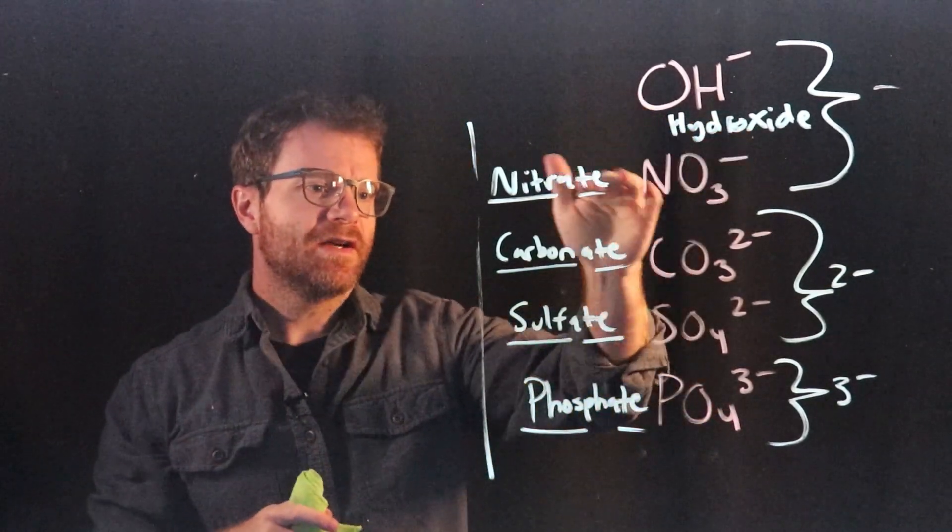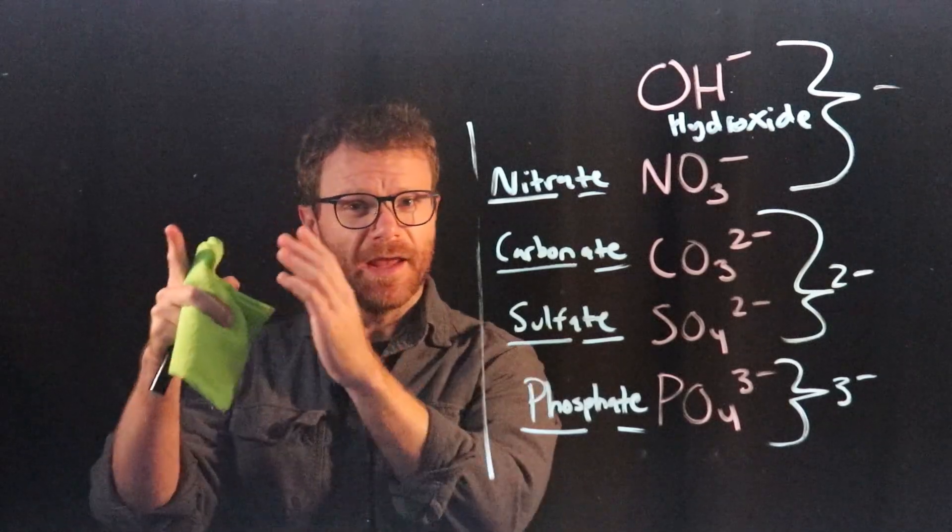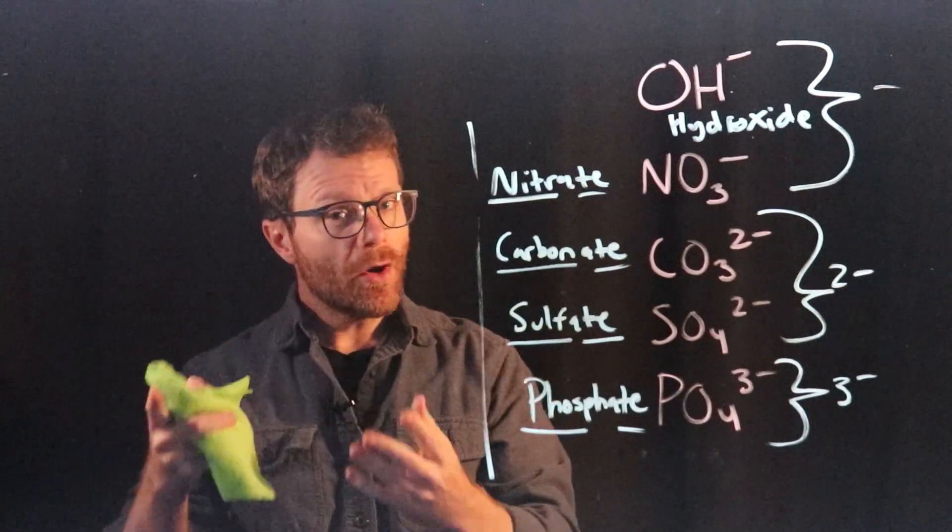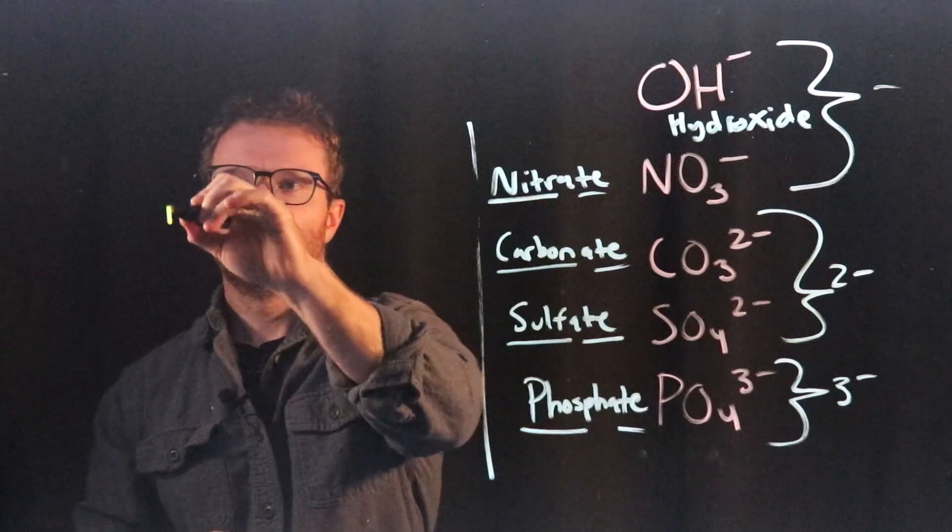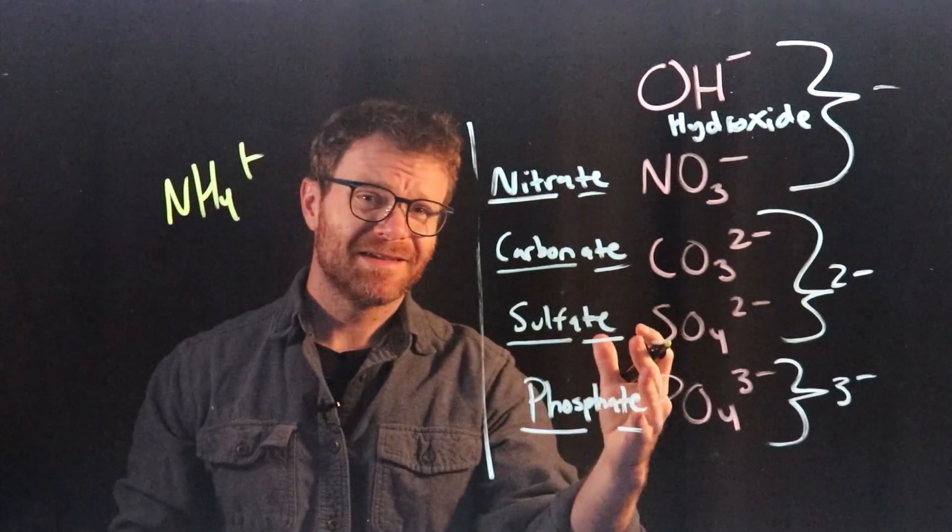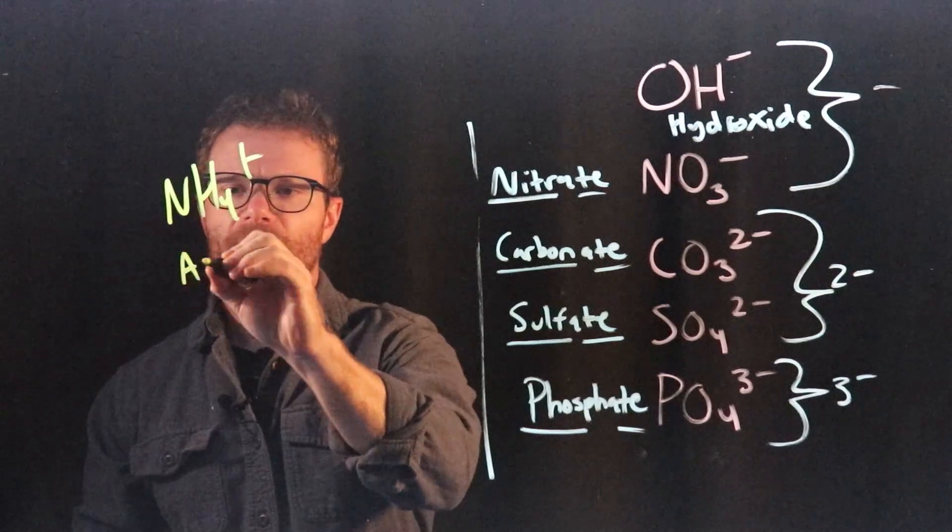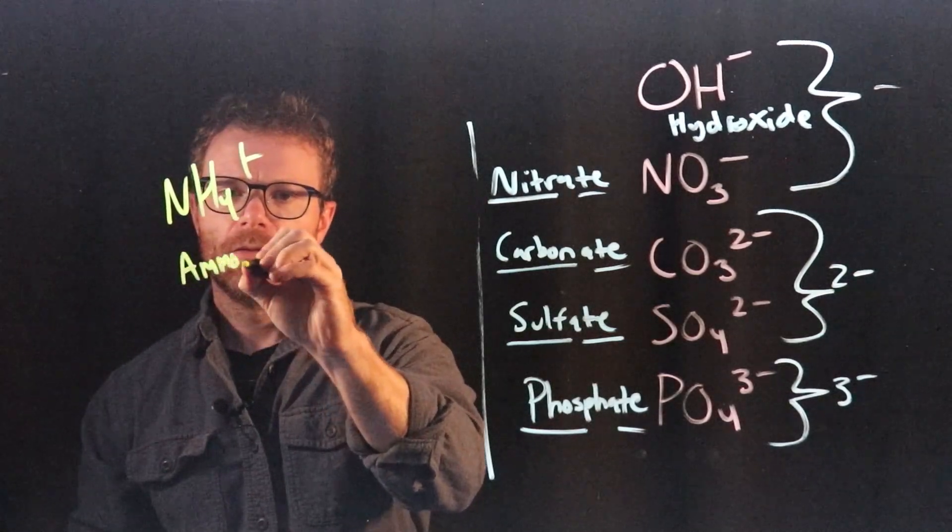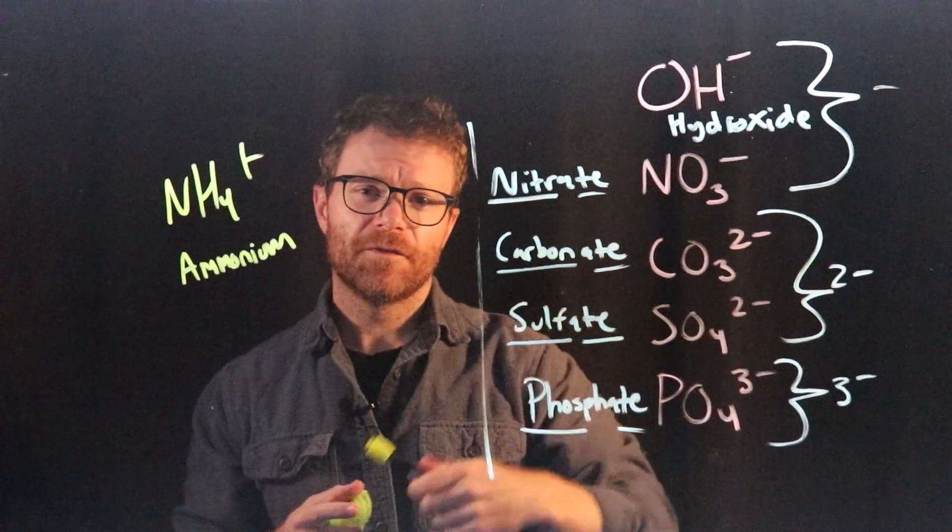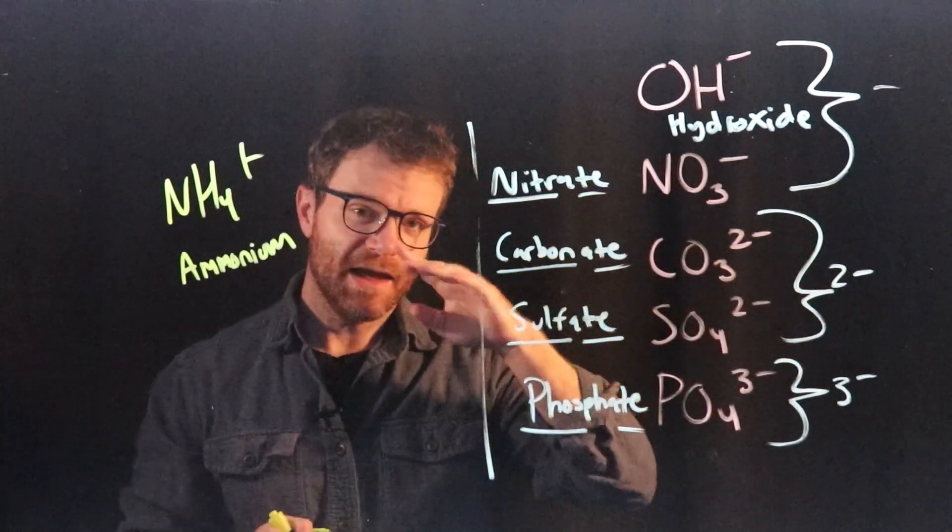Okay, so hydroxide, nitrate, carbonate, sulfate, phosphate, and then NH4 with a plus charge, which we call ammonium. You'll notice with the NH4, we don't call that ammonate. We call that ammonium. And that's because -ates are usually suffixes, things that come at the end of a name.